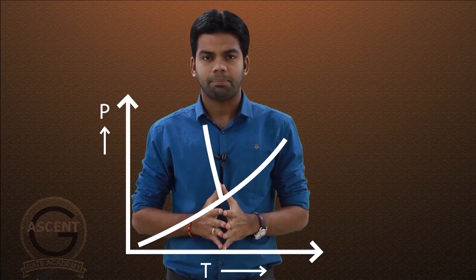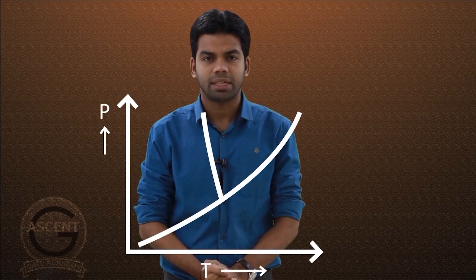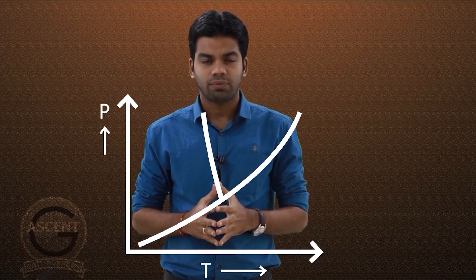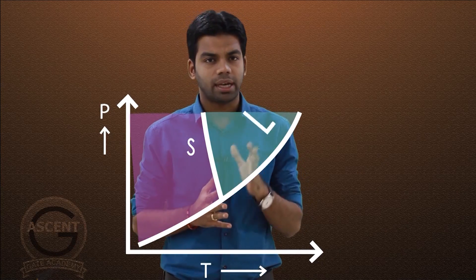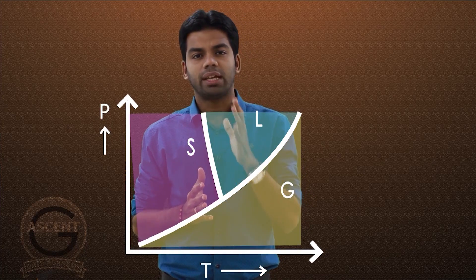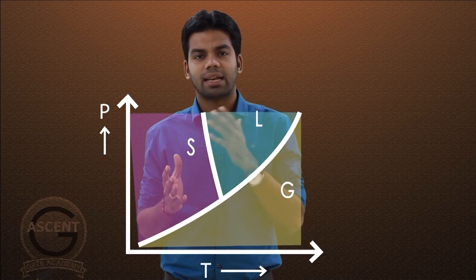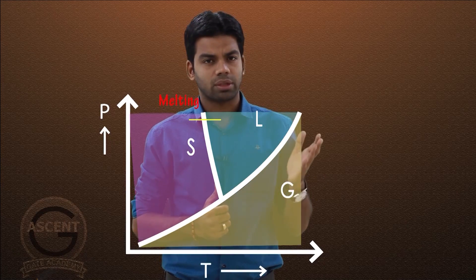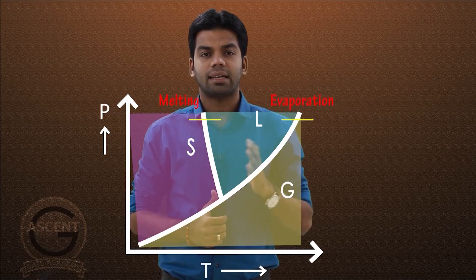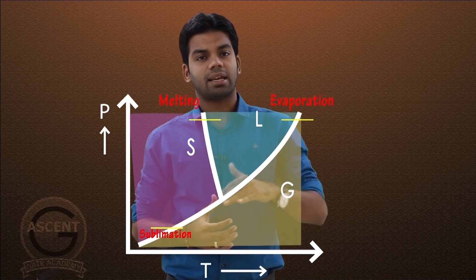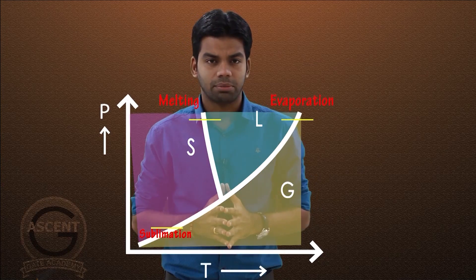In the PT diagram — pressure-temperature diagram for water — you can see it divided into three different zones: the solid zone, the liquid zone, and the gaseous zone. The conversion of solid to liquid is known as melting; liquid to vapor is evaporation; and when solid is directly converted to vapor, that process is known as sublimation — for example, when ice is directly converted to vapor.